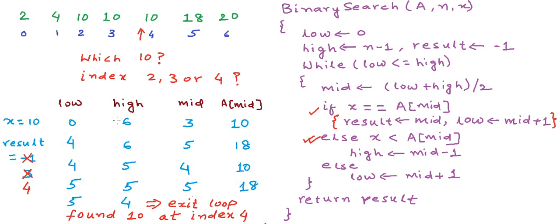This is binary search to find the last occurrence of an element in a sorted array. The time complexity of this algorithm is O(log n) — the time taken is proportional to log of n. In the coming lessons, we will see more variations of binary search and other scenarios in which binary search is applied. Thanks for watching.